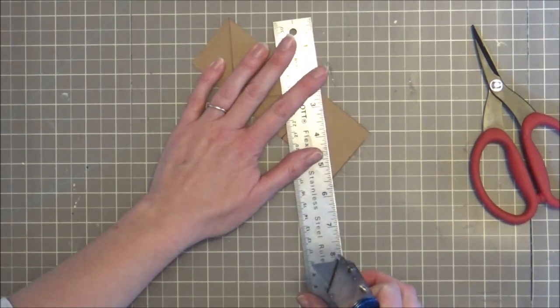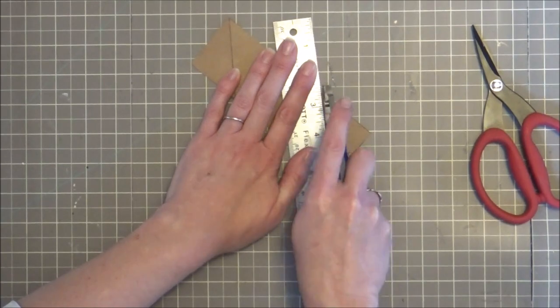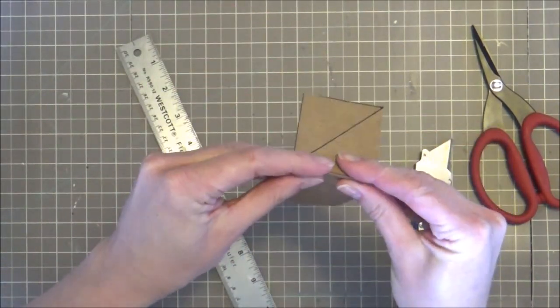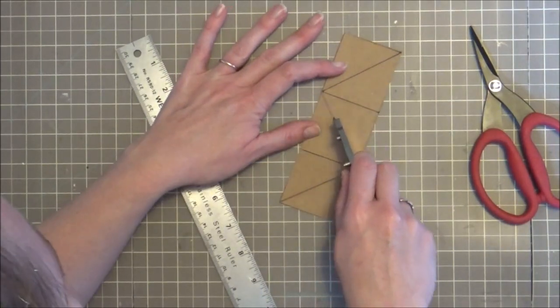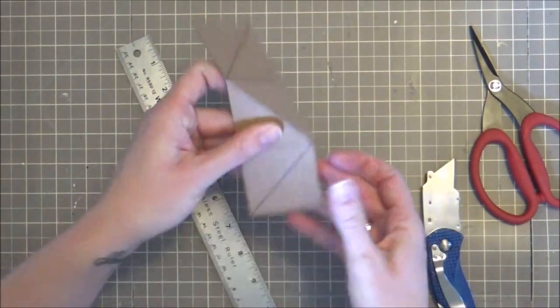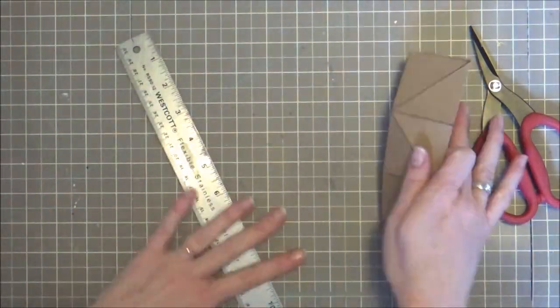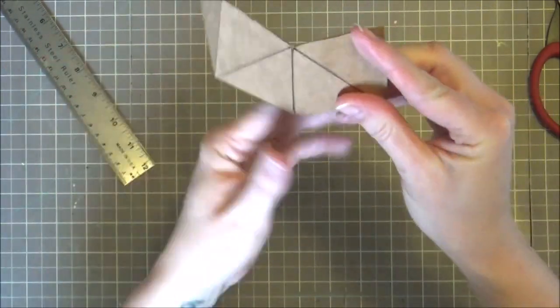I'm just scoring my diagonal lines now. Each of these folds is going to be folded away from you and you want to make those score lines as crisp as possible and as accurate as possible. It just helps in the overall creation of your ornament. There you can see I am folding those back.